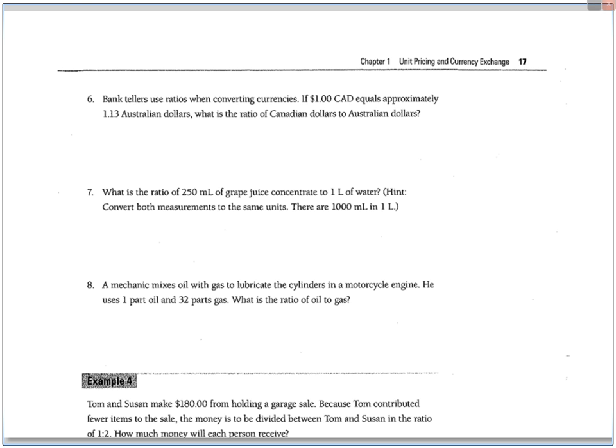Bank teller uses ratios when converting currencies. $1 Canadian equals approximately $1.13 Australian. What is the ratio of Canadian to Australian? Well, this is the ratio, 1 to $1.13. When we have decimals though, we don't typically like decimals in our fractions. So what they'll ask you to do is to slide this decimal twice. So in order to do that, you have to times by 10, times by 10. Every decimal move is a divide or a times by 10. Here, because we want the number to get bigger, we'll times by 10. Do that in the top, do that in the bottom. You get 100 over 113. This is the ratio.